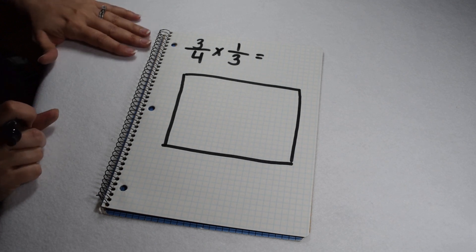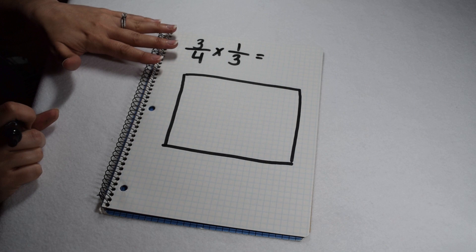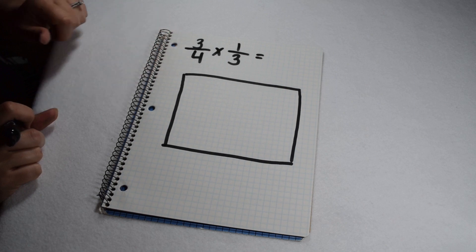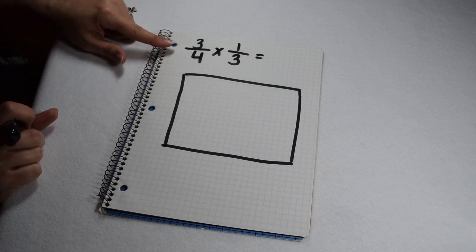A lot of times when multiplying fractions, we're asked to illustrate the problem on an area model. We're going to do that today with 3/4 times 1/3. Let's start by solving 3/4 times 1/3 so we know what solution we're looking for.